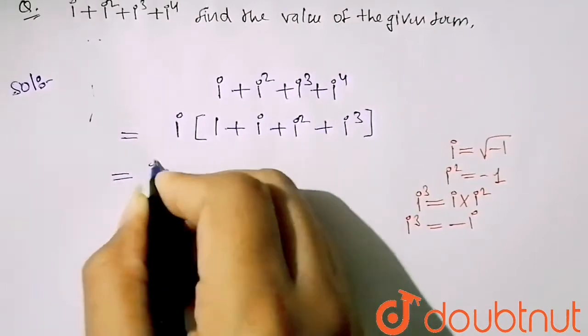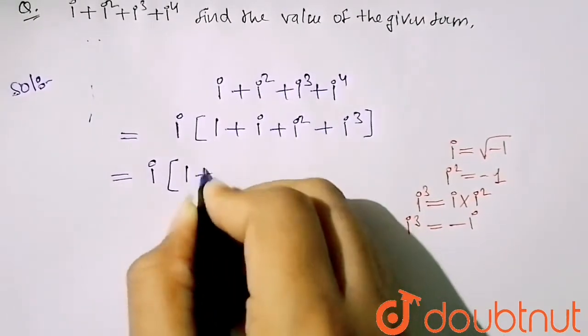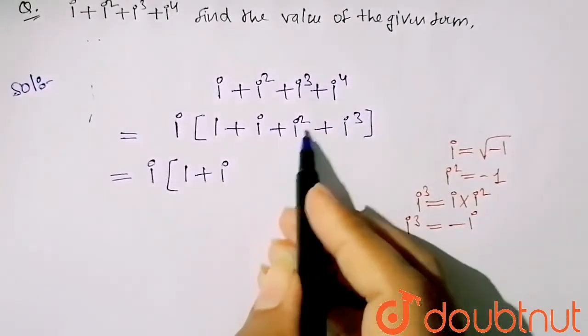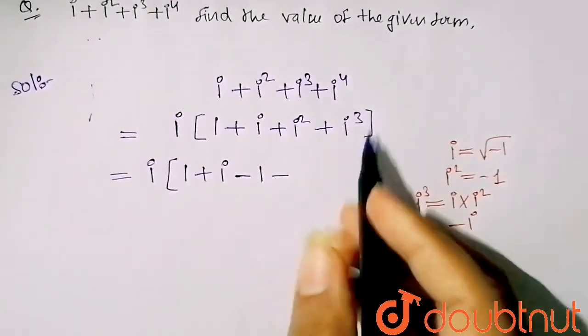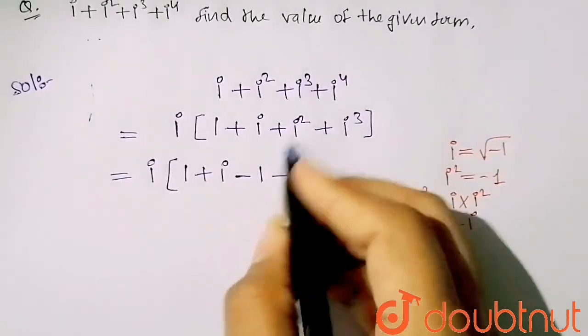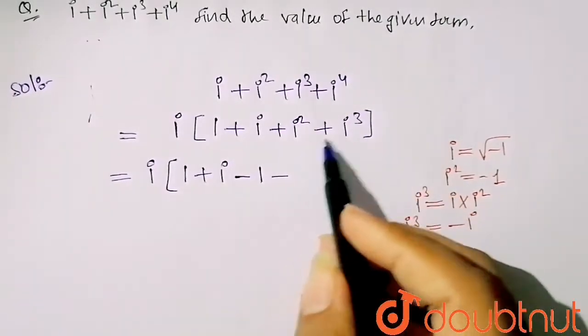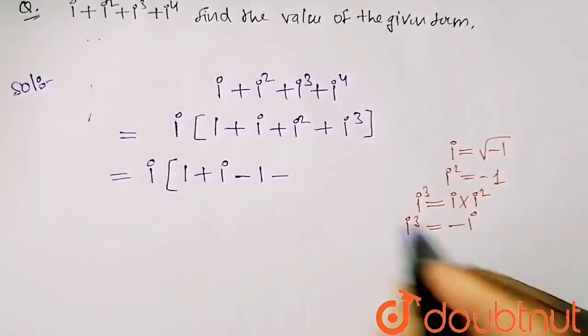So here I have taken iota common: iota times 1 plus iota. Iota square is minus 1, so here I will put the value minus 1. Iota cube is what? Plus, but here I will get the value minus iota, so that's why I have taken minus, so this is minus iota.